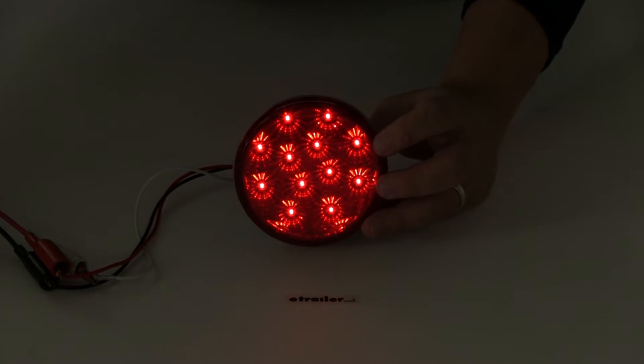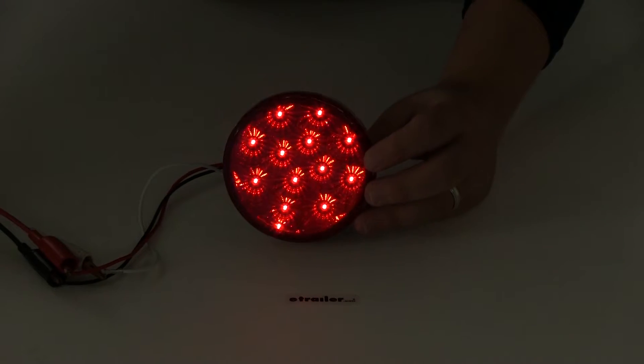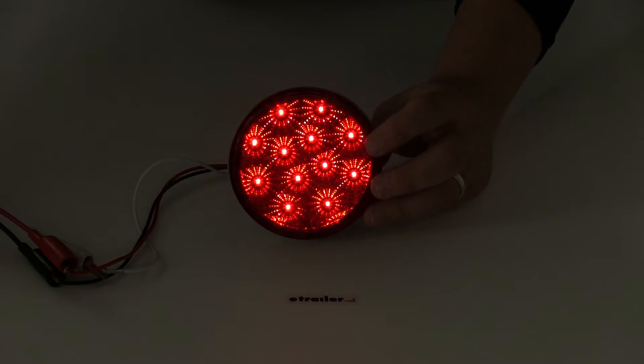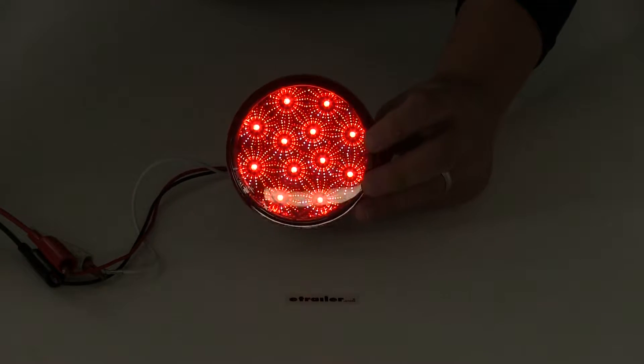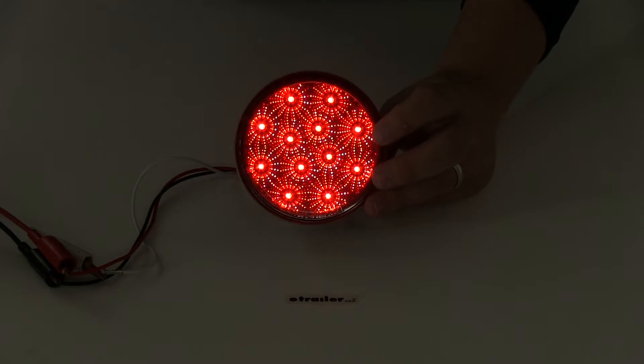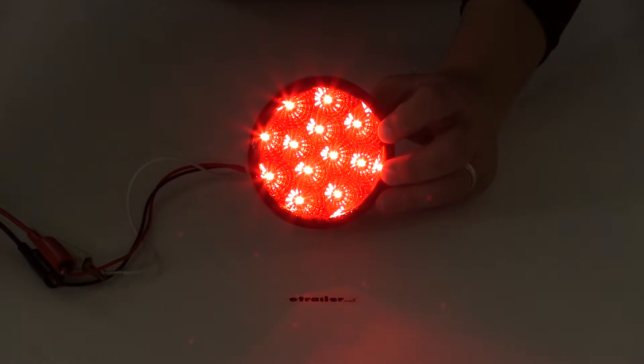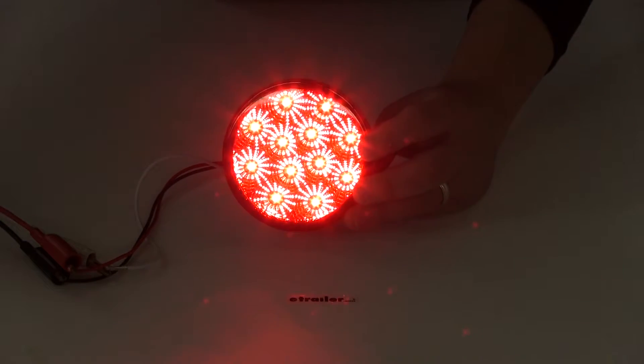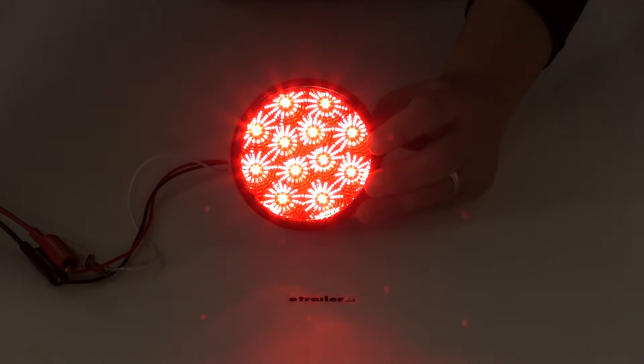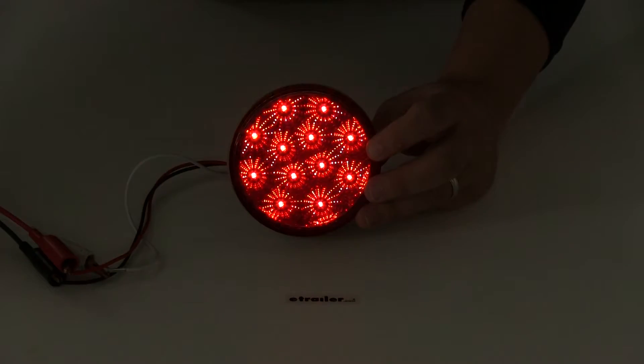You can see when we turn on the light it sends out a nice consistent LED signal. This is the tail light function. When we apply our brakes you can see how much that light output increases, and that's also going to be the same for the turn signal as well.